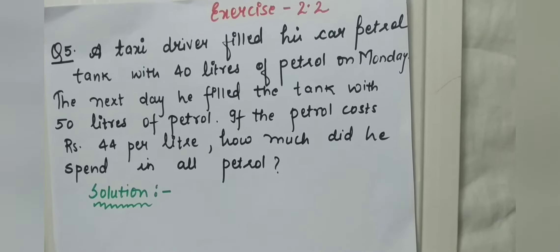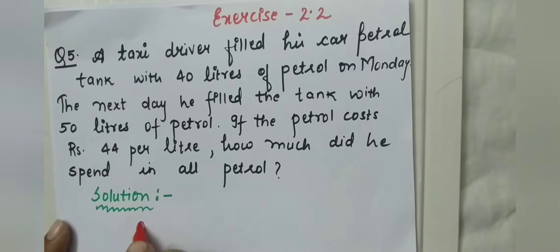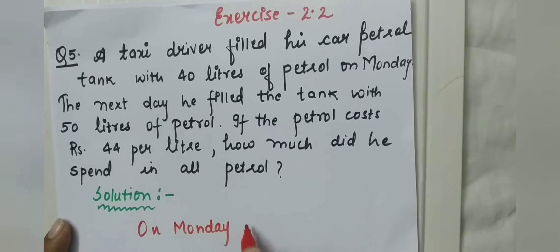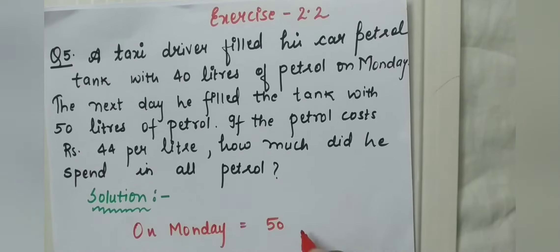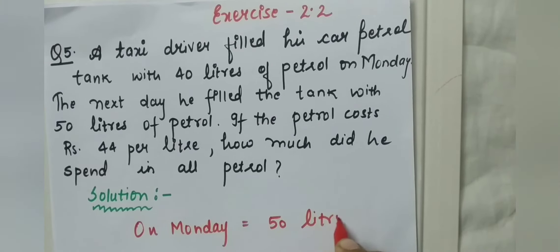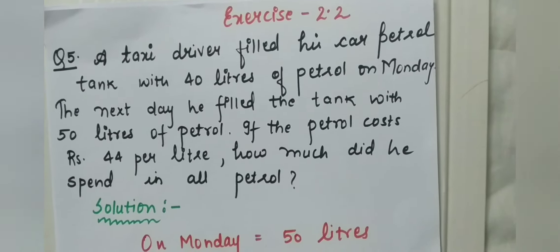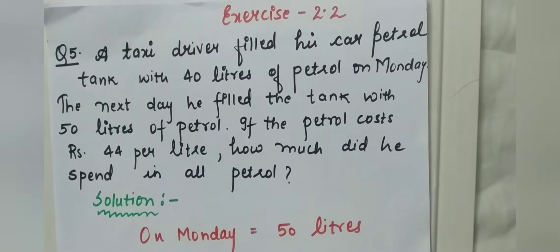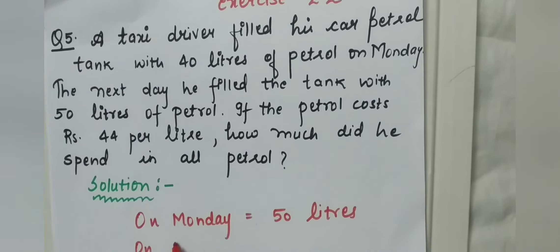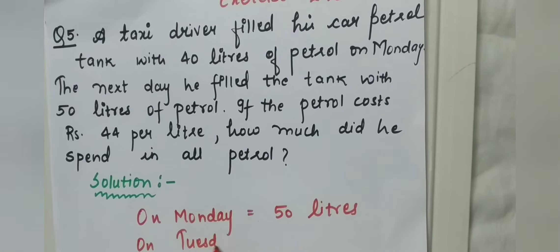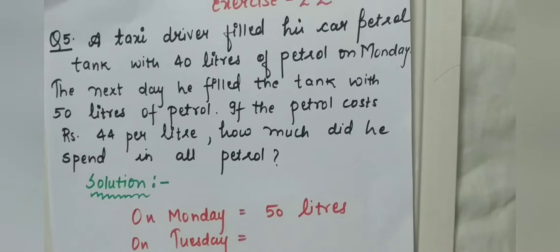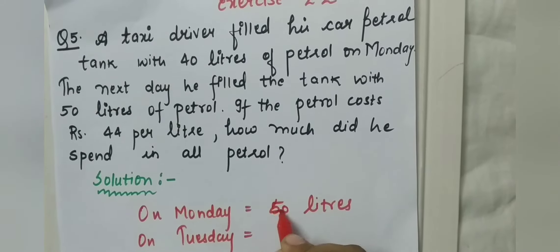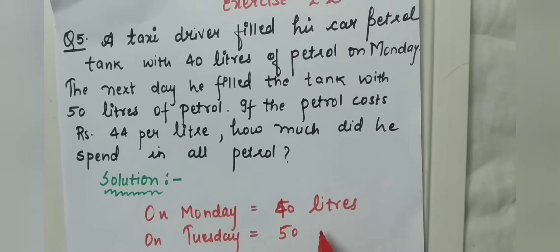First, on Monday, how much petrol did he fill? Petrol filled on Monday — that is 40 litres. Then what is mentioned in the question? The next day he filled the tank with 50 litres. So the next day after Monday is Tuesday. On Tuesday, how much litre did he fill? On Monday he filled 40 litres and on Tuesday he filled 50 litres.